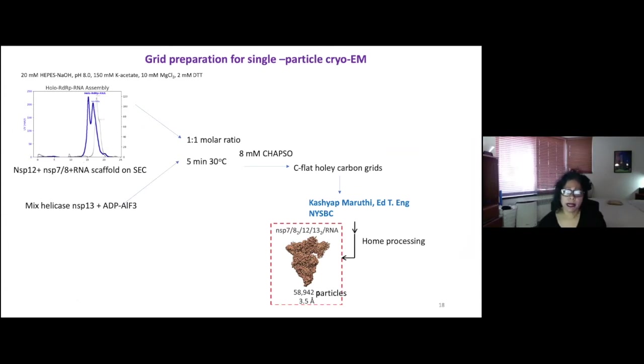So we prepare our grids by combining, we assemble our RTC on gel filtration, size exclusion column. And then we added helicase and aluminum fluoride. We did grids with and without CHAPSO. And the final structure I'm going to talk to you about today is at a nominal resolution of three and a half angstroms.